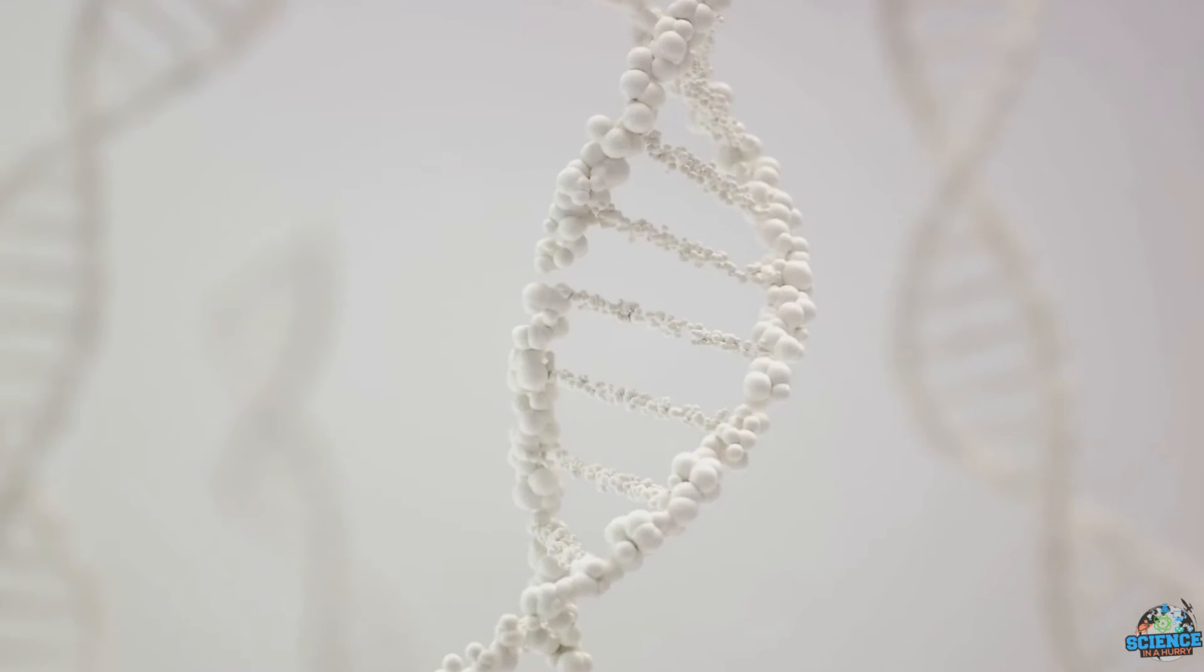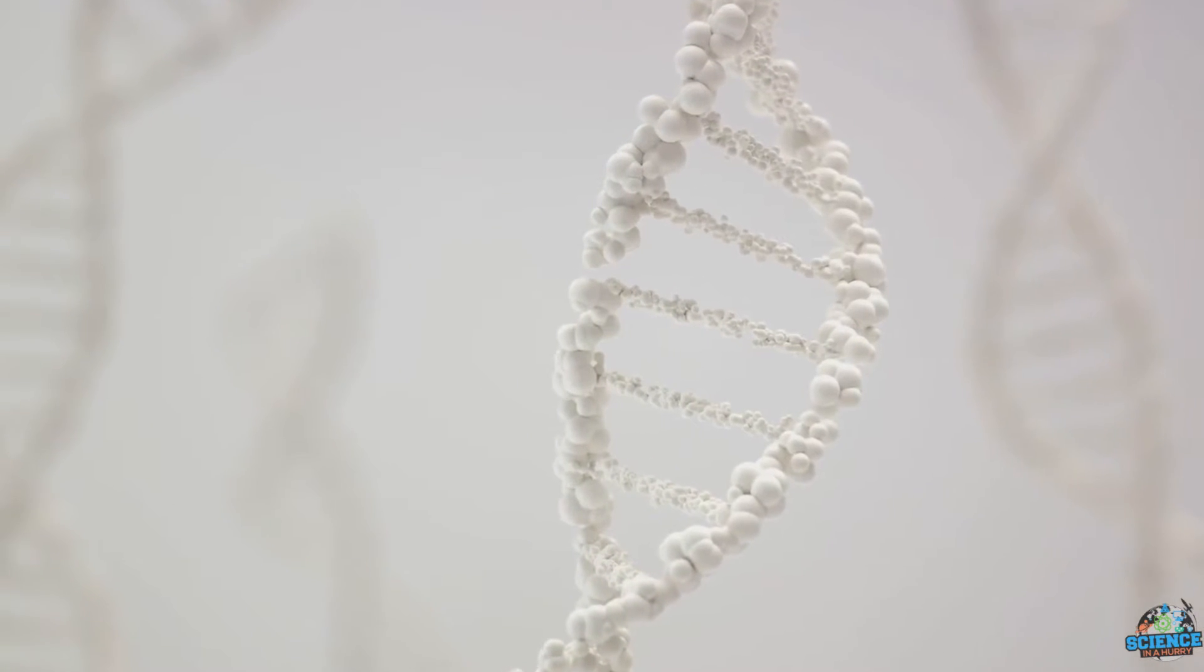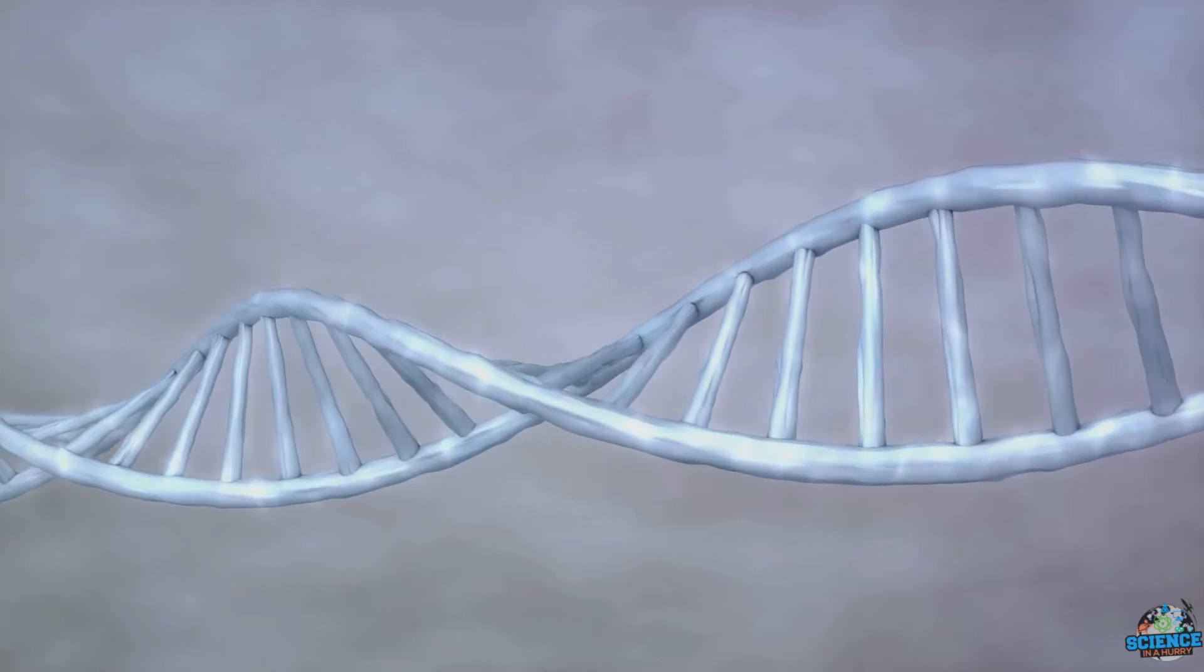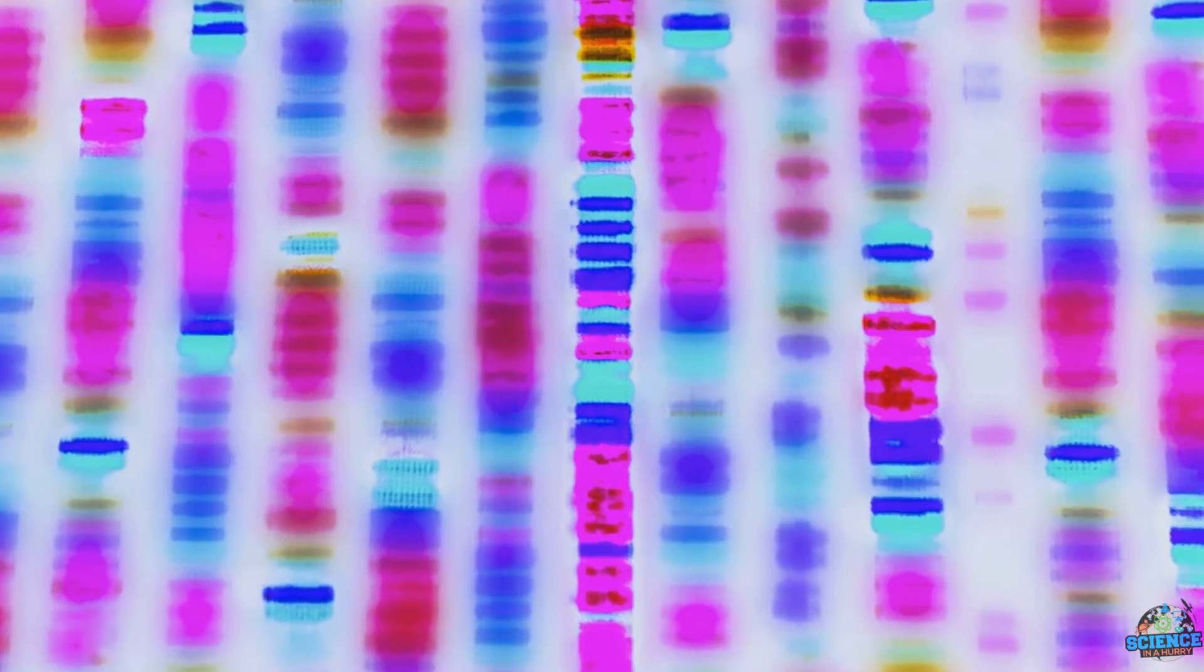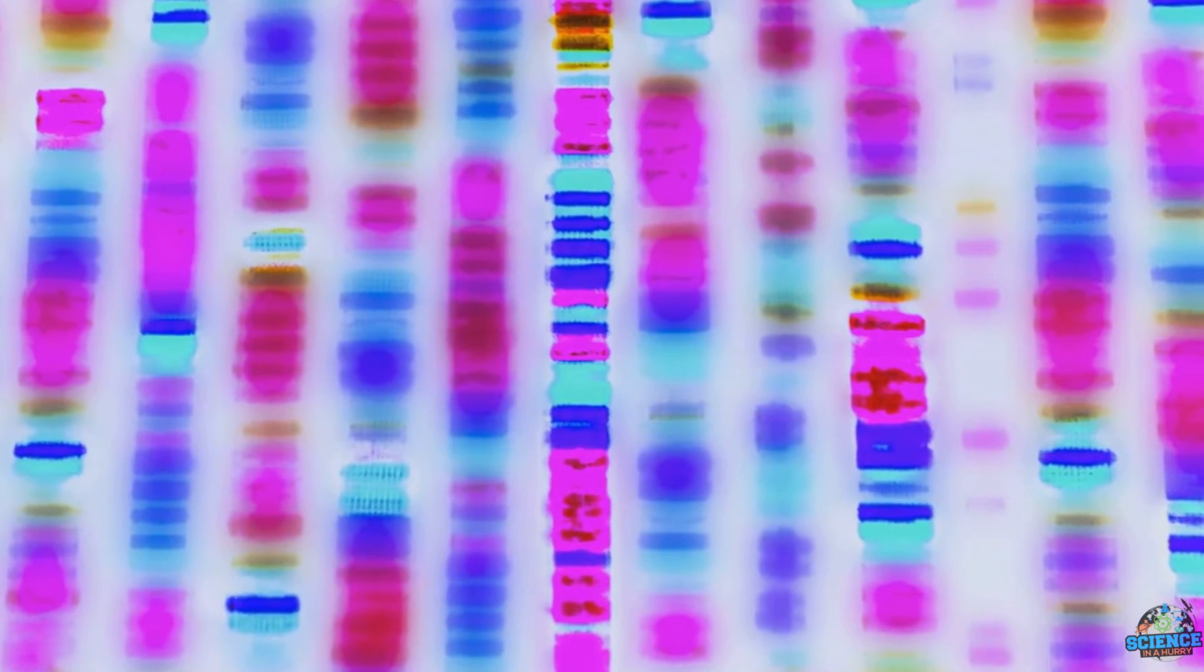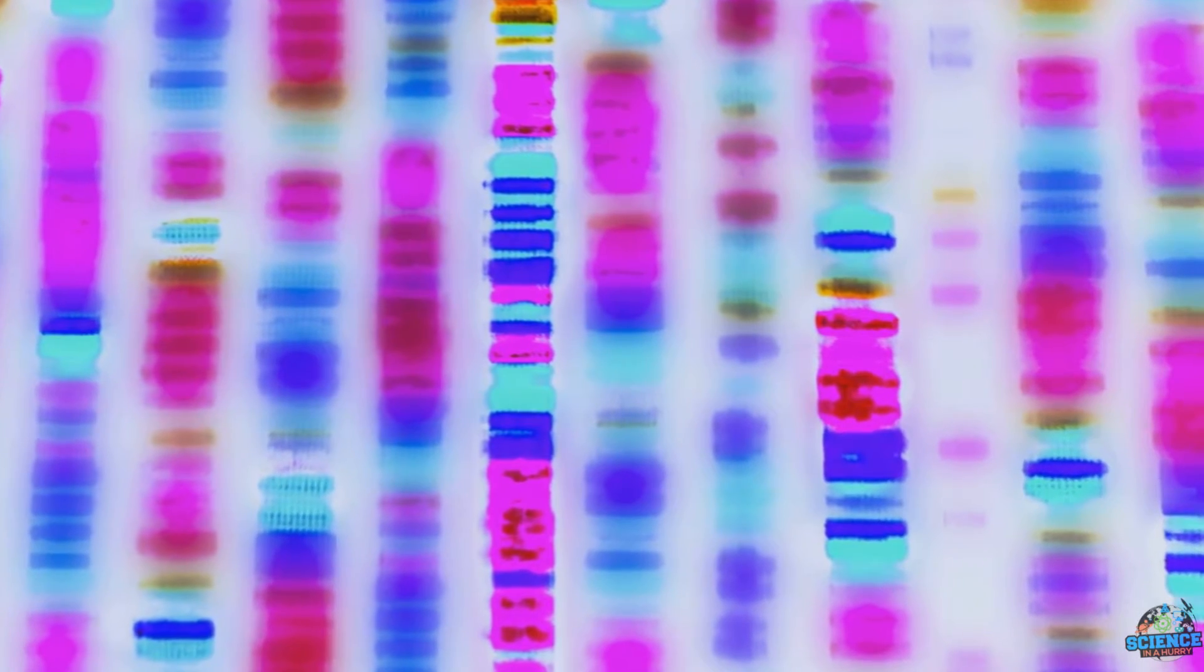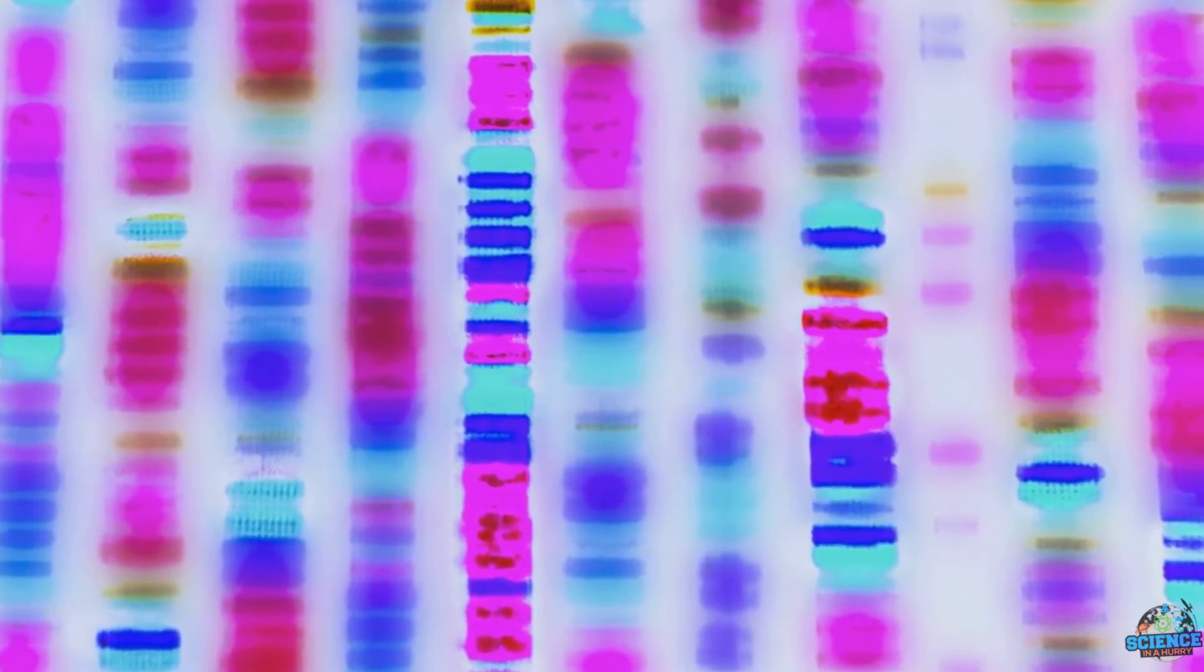So how does one edit a human gene? Picture this. Our bodies are made up of millions of cells and within each cell we find our DNA, the blueprint of life. This DNA is organized into units called genes, which instruct our bodies on everything from our hair color to our risk of certain diseases.